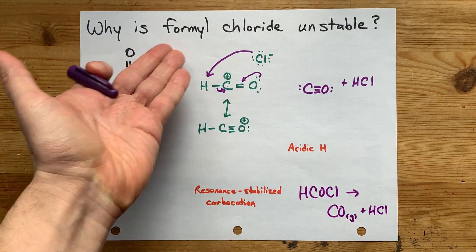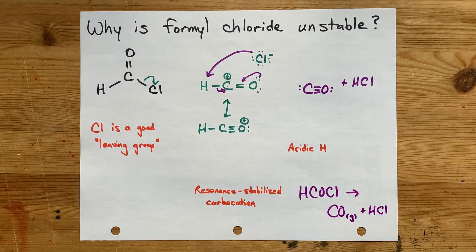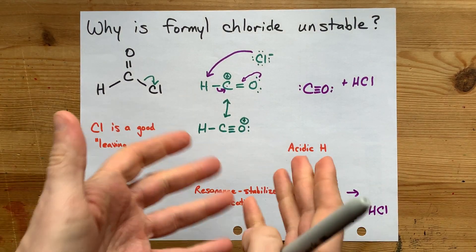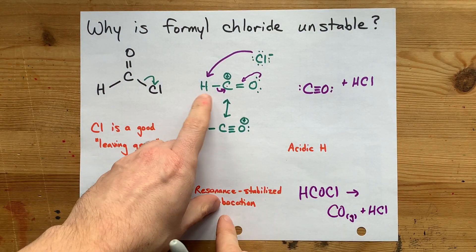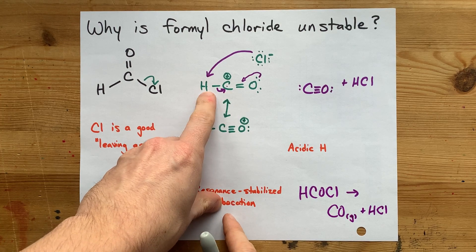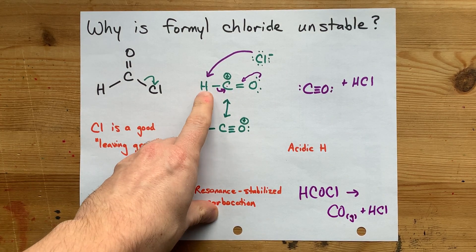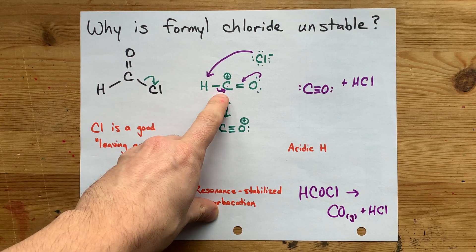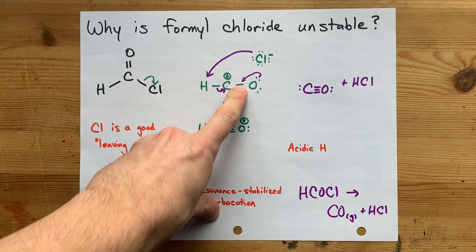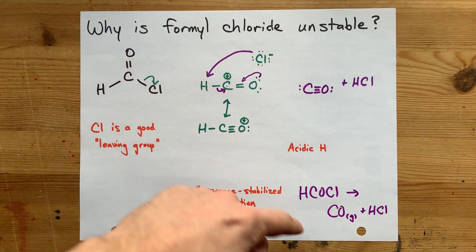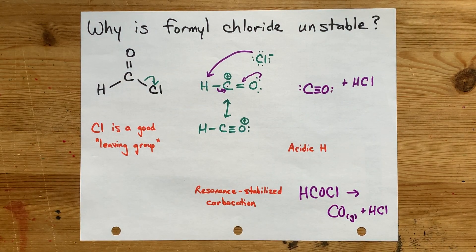The reason it happens only for formyl chloride and not with longer chain acid chlorides is because the other longer chain acid chlorides have a carbon-carbon bond here. And that particular bond won't fracture, whereas this H is willing to leave on its own, leave the electrons behind, and it is an acidic H that allows the CO or carbon monoxide to form.